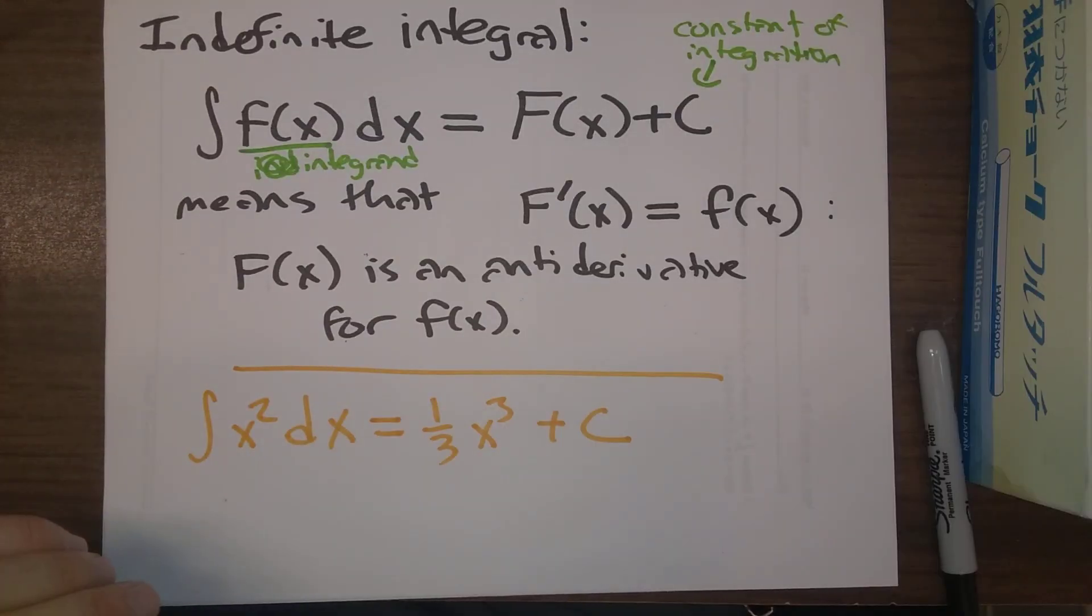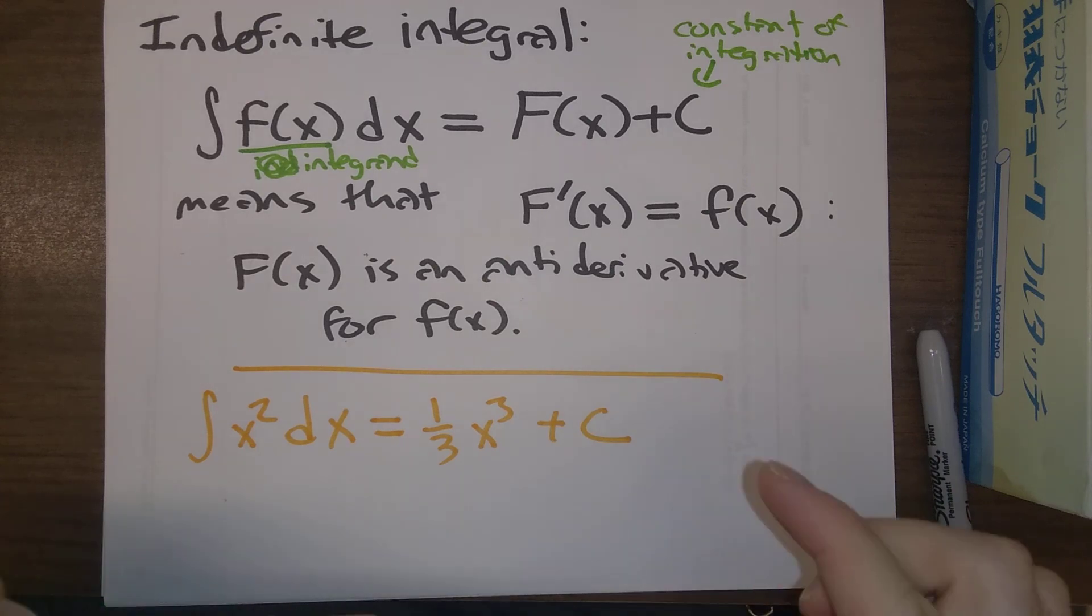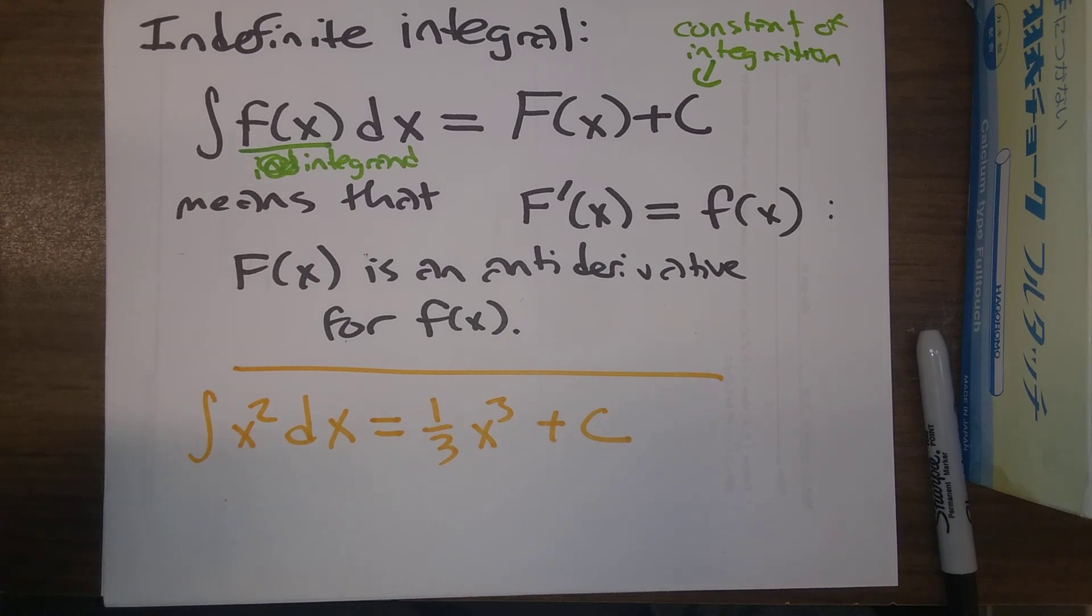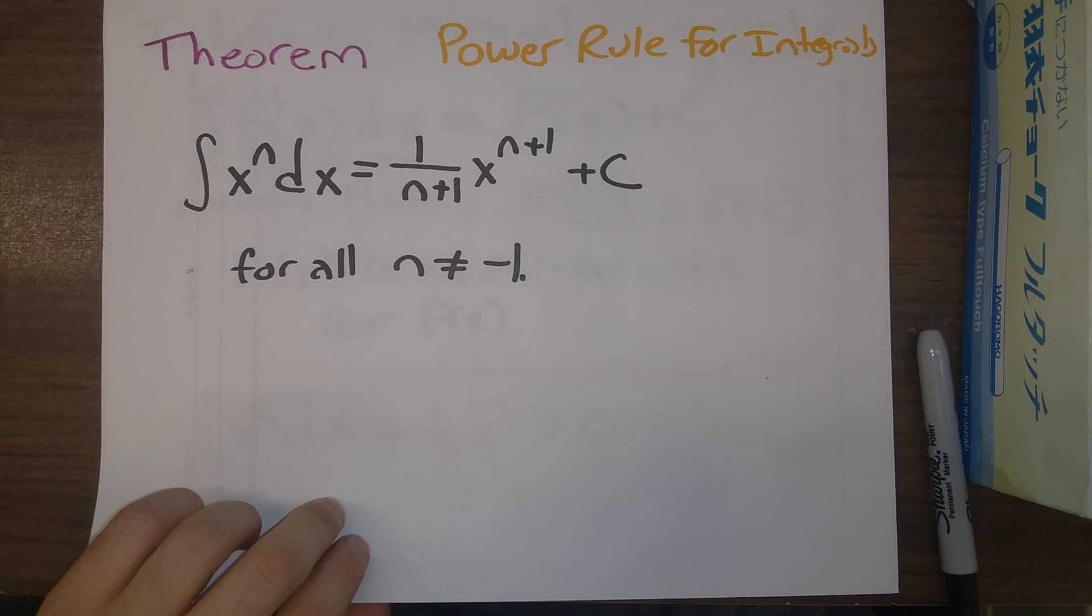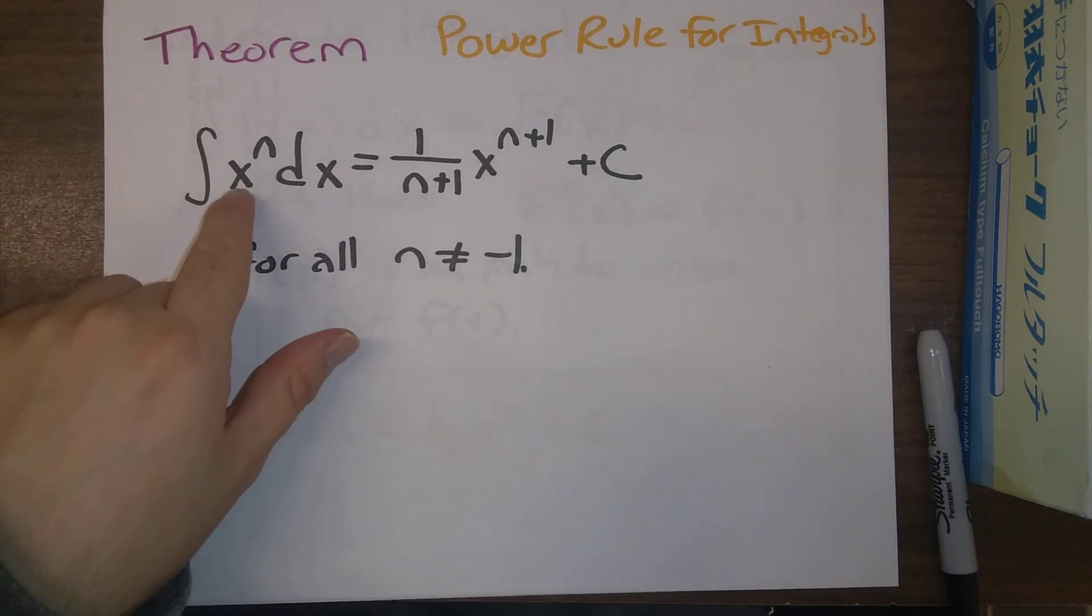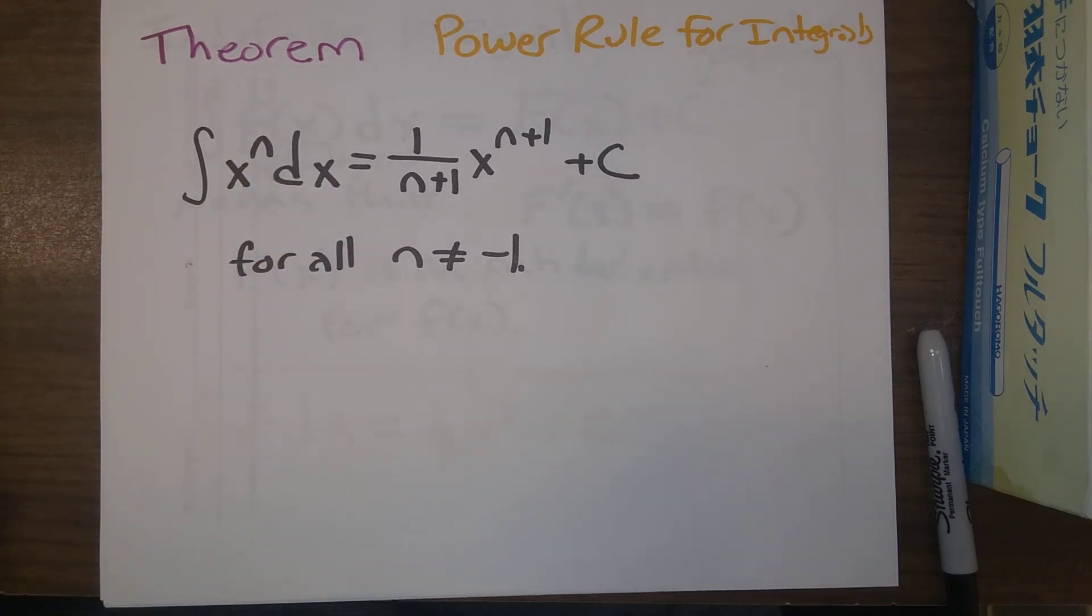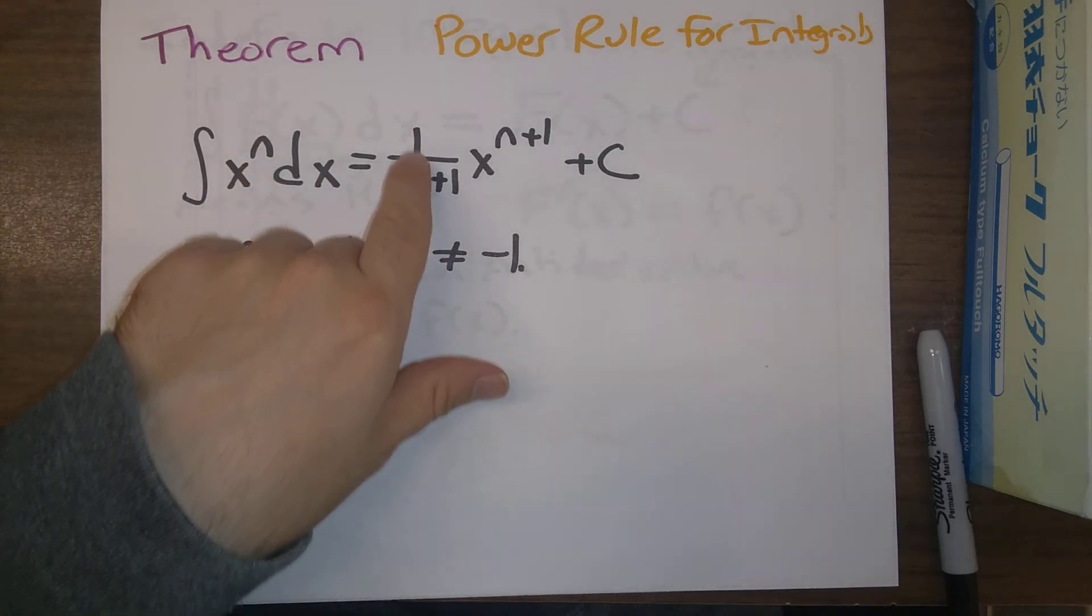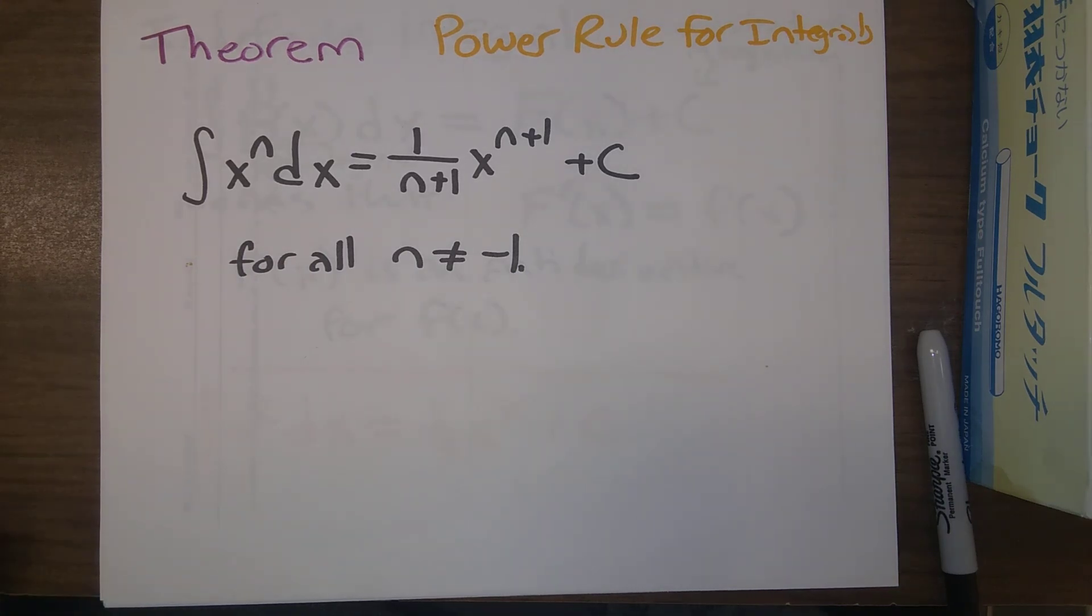Now as it turns out, this example here, the indefinite integral of x squared dx is 1 third x cubed plus c. This is a particular example of the power rule for integrals. So here's this theorem. If we integrate x to the n dx, indefinite integral is going to be 1 over n plus 1, x raised to the n plus 1 power, plus our constant of integration. And this formula, this rule, works for all n that's not equal to minus 1.